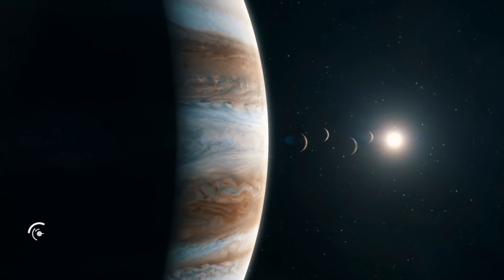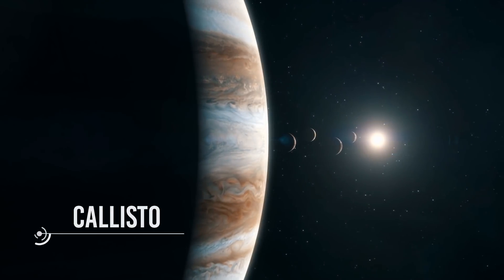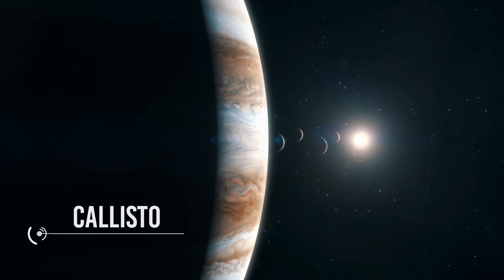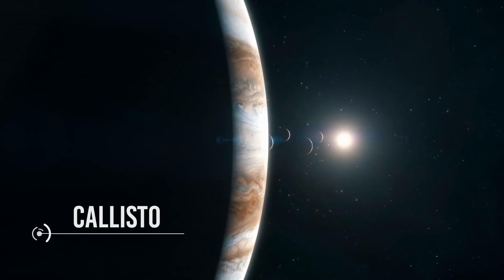Today we want to talk about Callisto. This will conclude our grand tour of the Galilean satellites, the four moons of Jupiter.